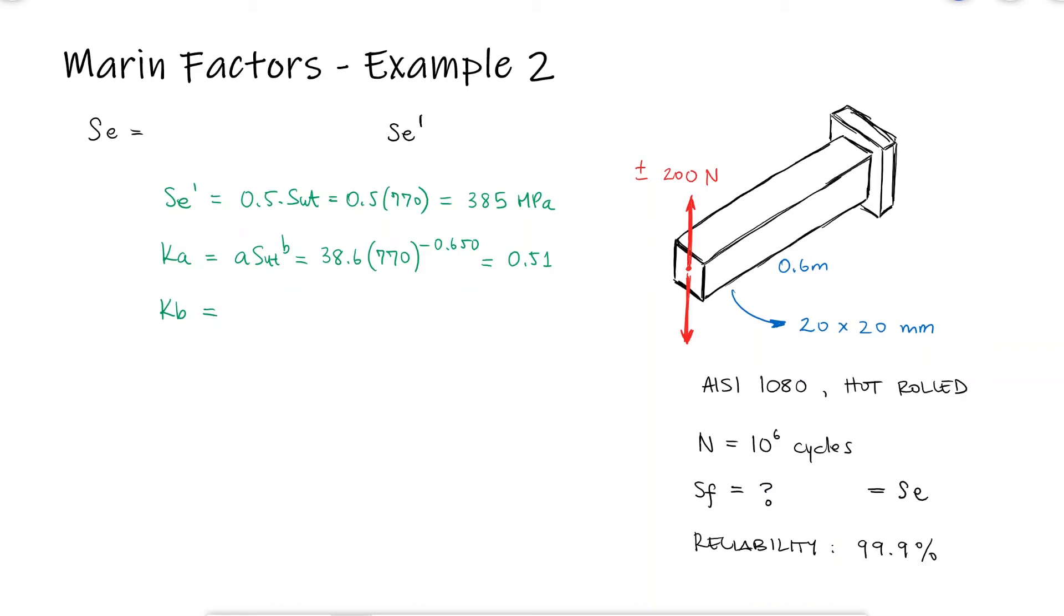The effective diameter for a rectangular cross section is 0.808 times the square root of the height times the base, which are the same and equal to 20 in this case. The expression for Kb we would use would be the one for diameters between 7.62 and 51 millimeters.